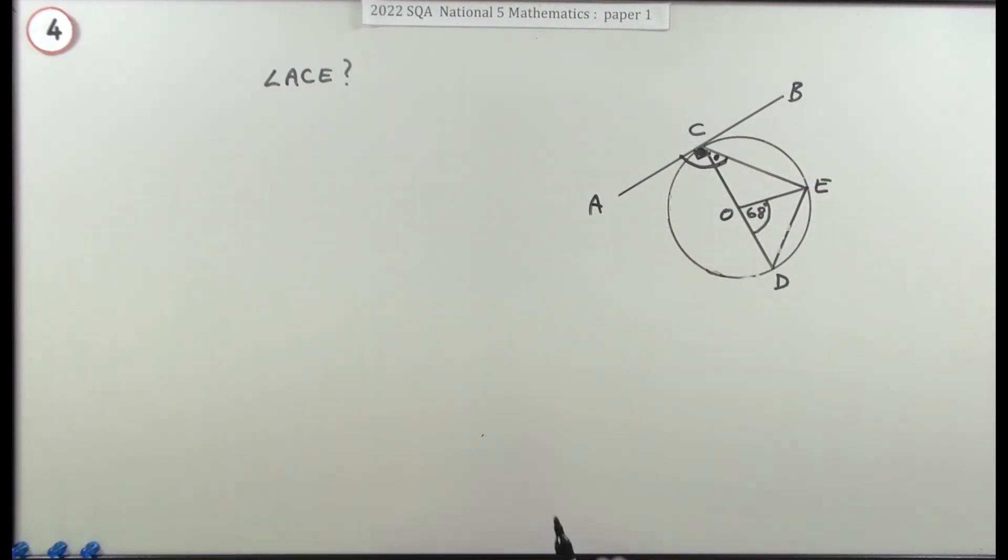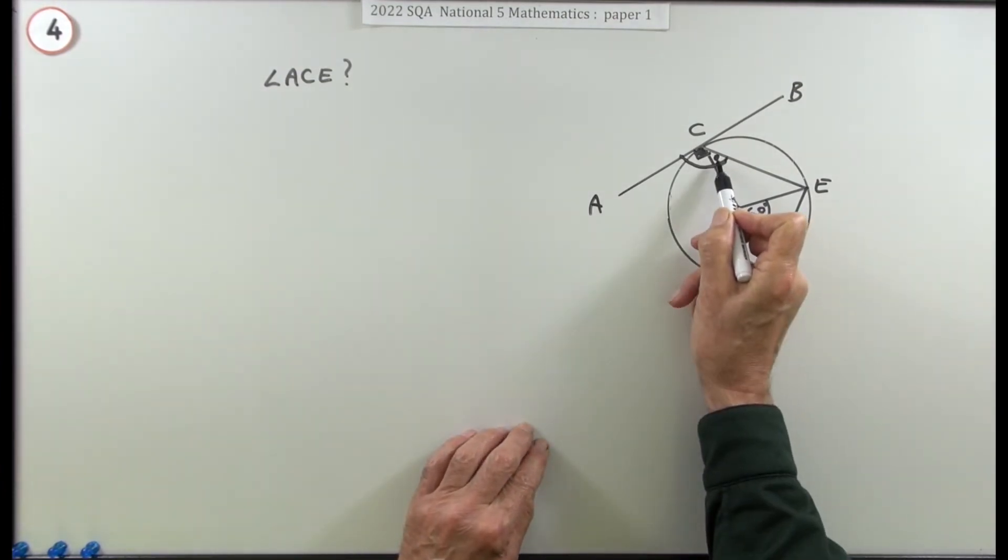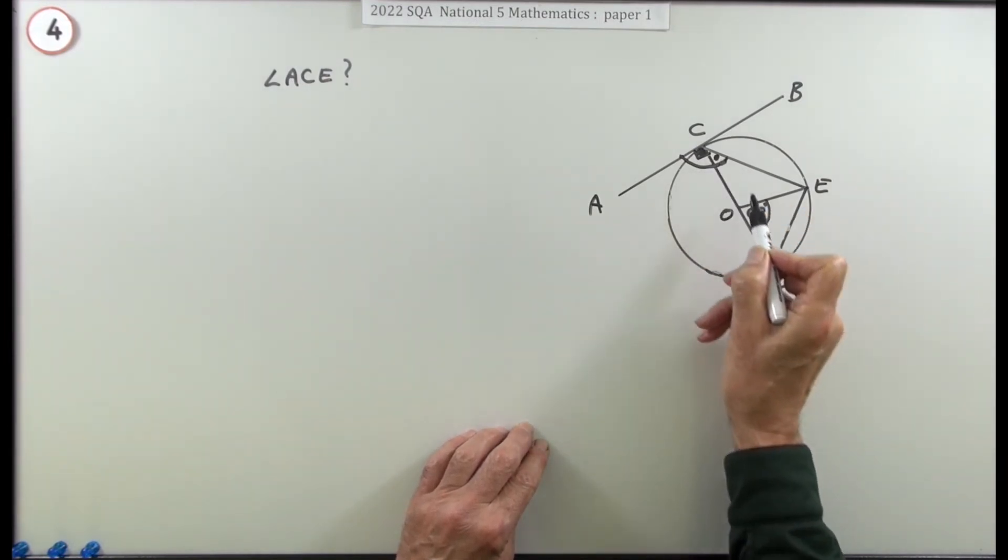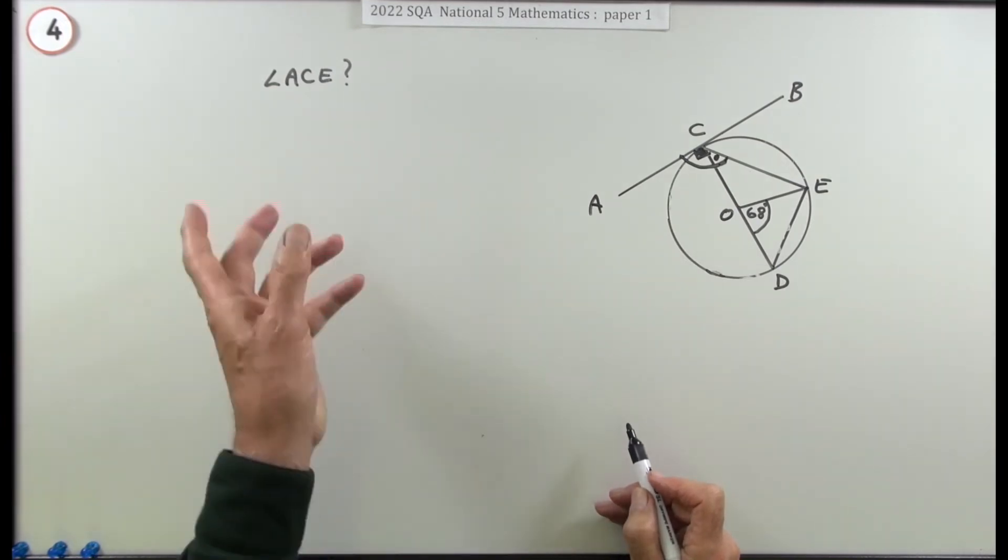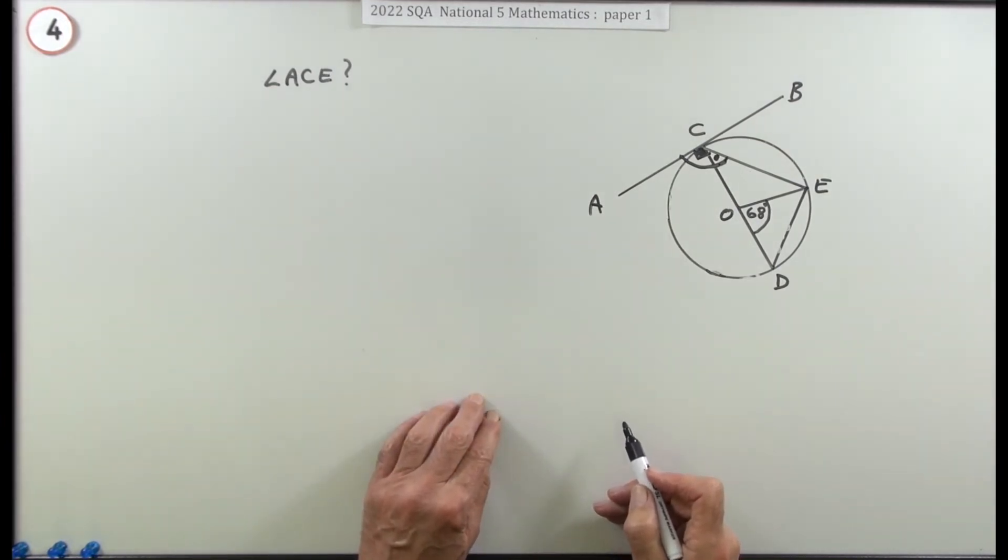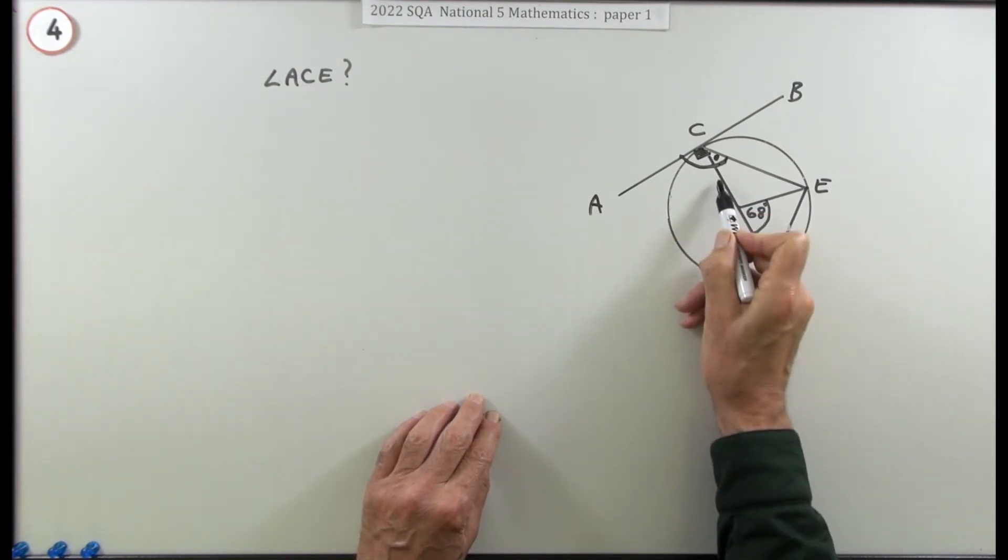I would have looked at that and said the angle at the center is 68 coming from these two points, so the angle at the circumference is half of 68, so that must be 34. But you can't do that. You're going to have to work your way there. So what's the plan? How can you get from 68 to this angle here without using the fact that that angle is half the angle at the center, which you don't know - but you do know, but I don't think you're able to put that down.